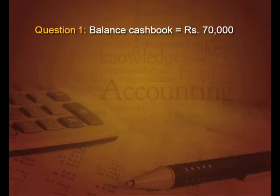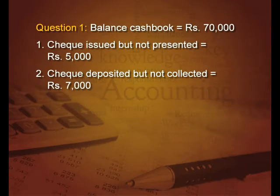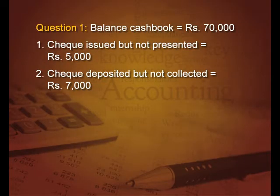Write the first line: balance as per cash book, 70,000. Now we discuss entry by entry. The first entry — 5,000, check issued but not presented — has reduced the cash book balance. When you issue a check, it reduces the cash book balance. So add 5,000. The second entry — 7,000, check deposited but not collected — would have increased the cash book in the first instance, so deduct 7,000.